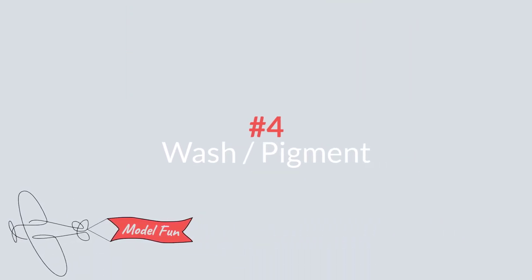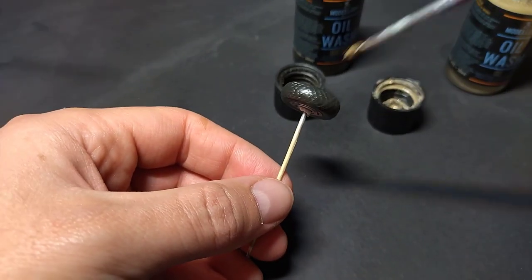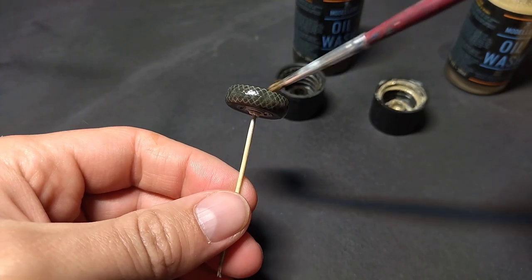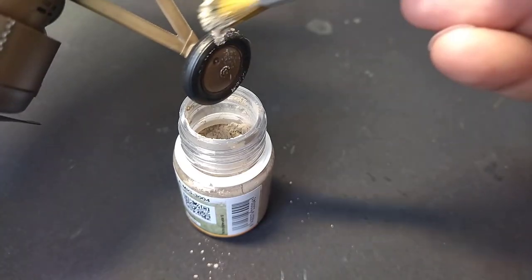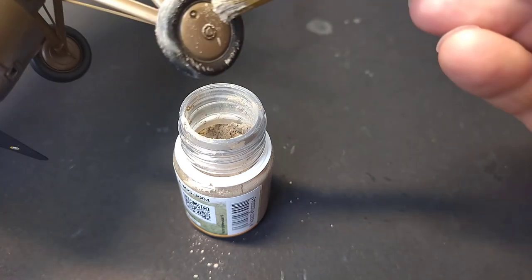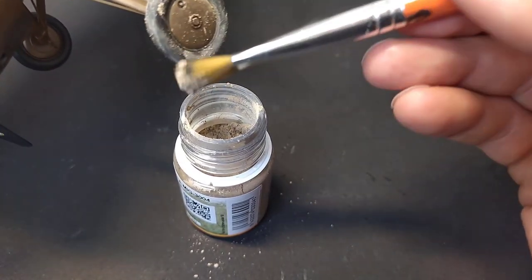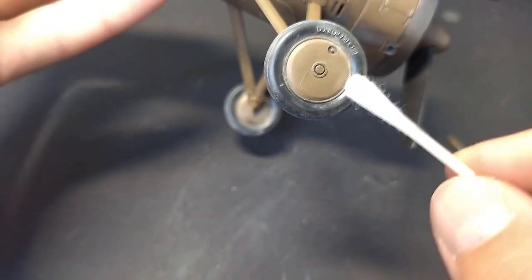Unless you want your model to look brand new, use wash and or dry pigment to make the tire look used. These are simple techniques, not time consuming, but can add so much realism to your model.